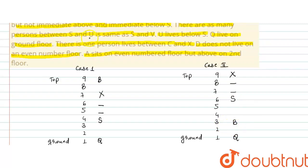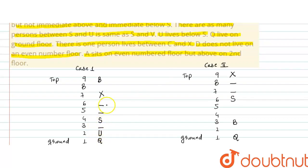There are as many persons between S and U as between S and V. यहाँ पर S की position है। U की position यहाँ पर रख सकते हैं, और V की position यहाँ पर होगी — एक person छोड़ करके below में U और V की position होगी। U lives below S — मतलब यहाँ पर U की position को रखते हैं। S और U के बीच में एक person का gap है, और S और V के बीच में भी एक person का gap होगा — यहाँ पर V की position होगी। इस case में भी एक person का gap होगा और यहाँ पर U की position होगी।